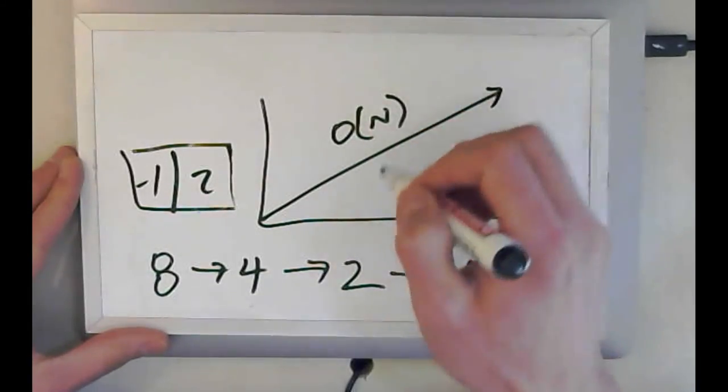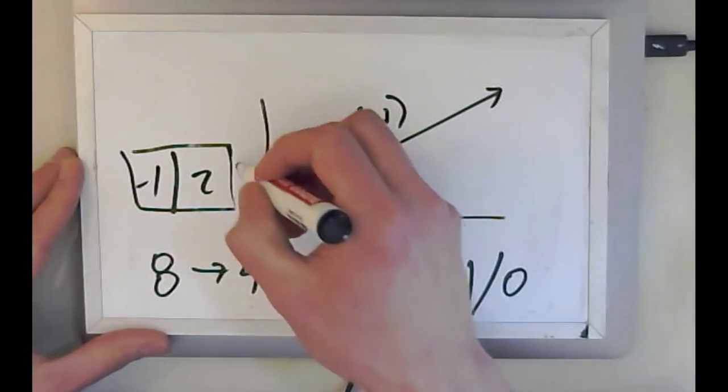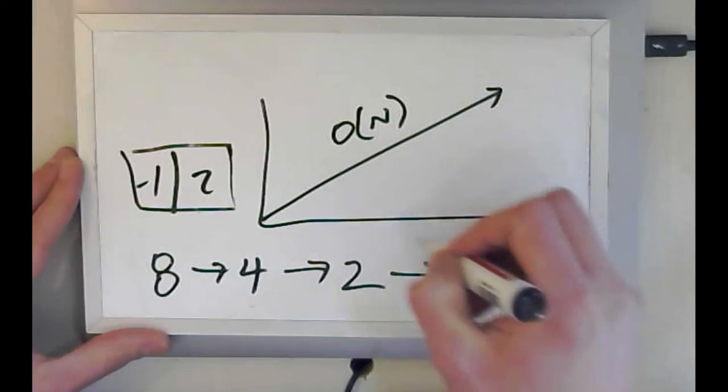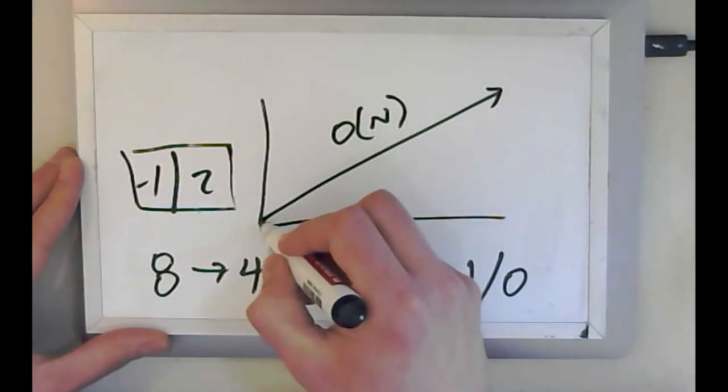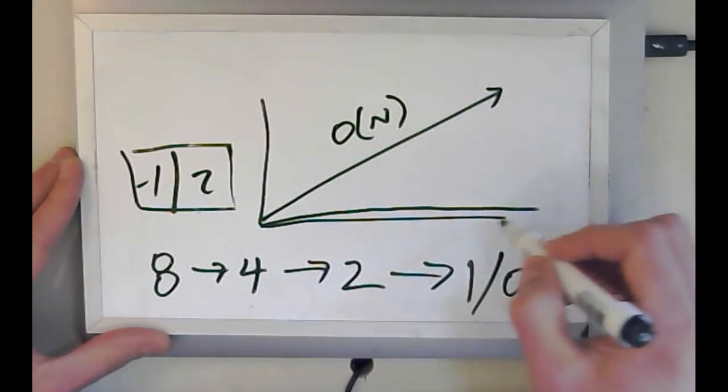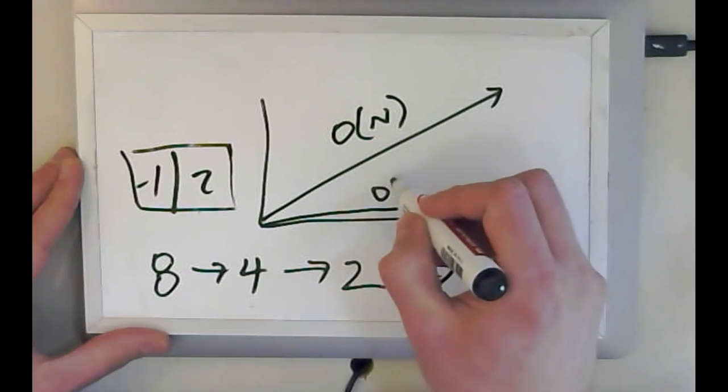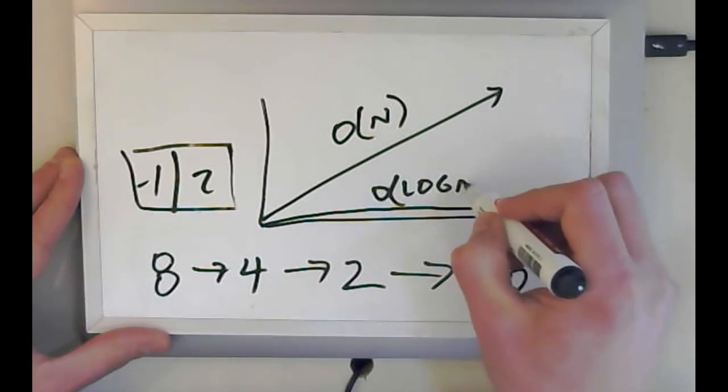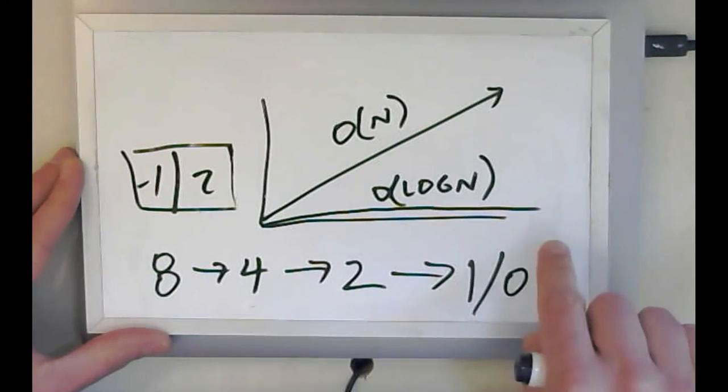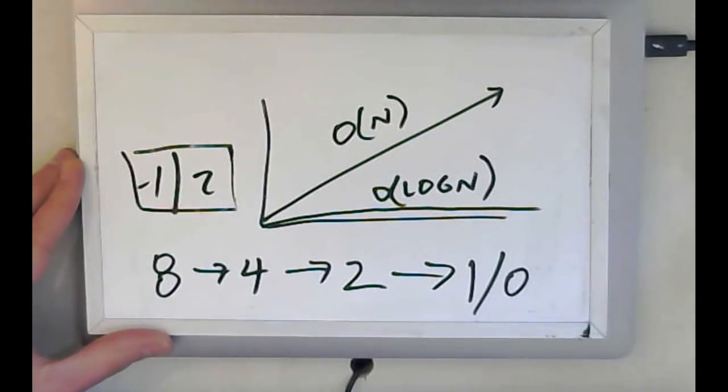So you remember when we did our comparisons of different runtimes. So O n looks like this. I mean, it's linear. So it goes up, this is the size of the problem and this is the runtime. O log n looks like this. It is really much, much gentler than O n in terms of its growth. It grows, it gets bigger, but think about it. If I have an array with 1,000 values,